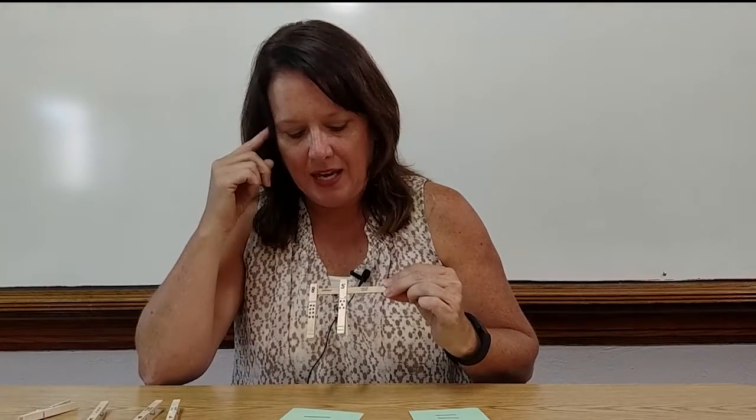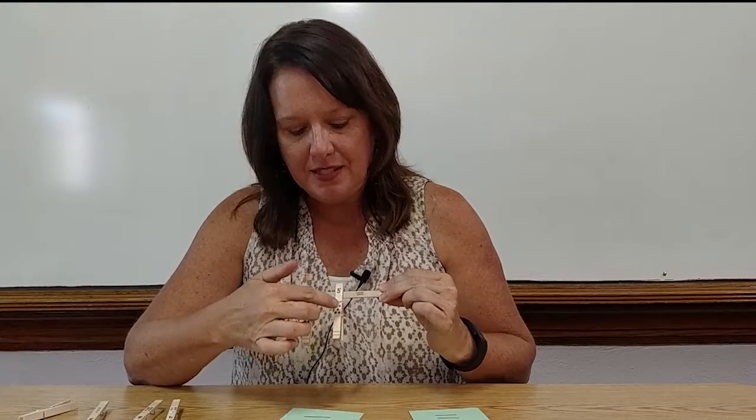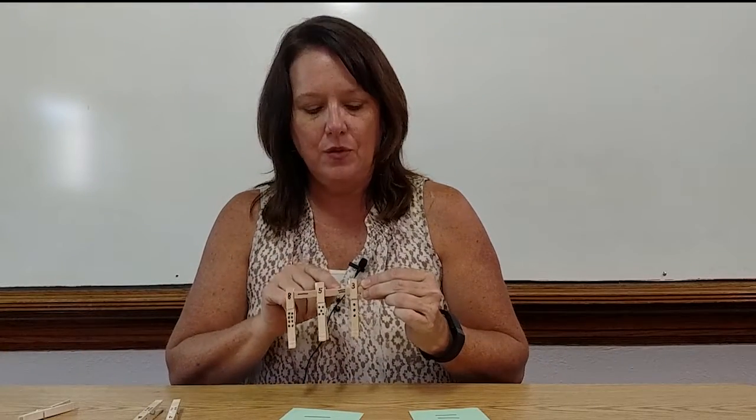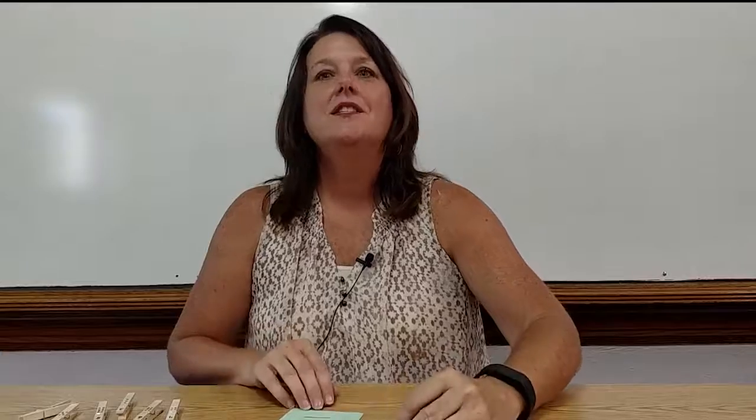Put eight in your head. Now take away five. Count back five. Eight, seven, six, five, four, three. Boys and girls, I left three roses in my garden, because eight take away five equals three. You did such a nice job today counting backwards. And this is one way that I would introduce the subtraction symbol to the children in my classroom.